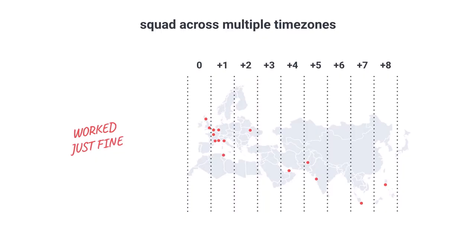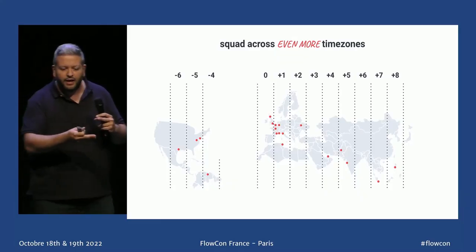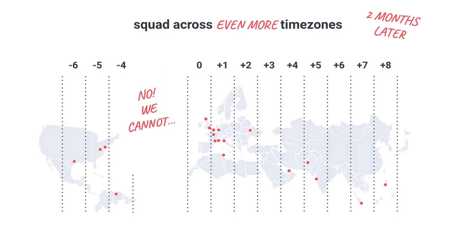At that time there were five people in product and around 30 in engineering, so it was fairly scalable. One year ago, we acquired our first company — based in New York and its area. And we thought, if we could work across two time zones, certainly we can make it work for three or more. So we tried. Two months later, we failed. We cannot work across three time zones — obvious, you would say, but not so obvious when you really want to try.